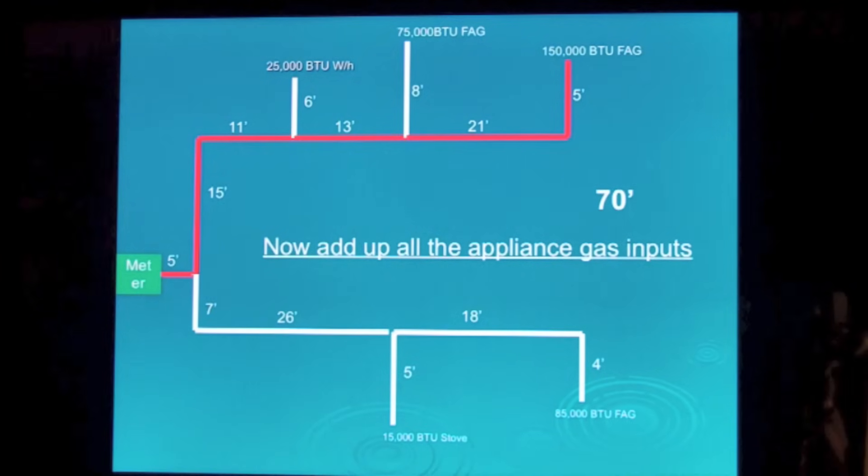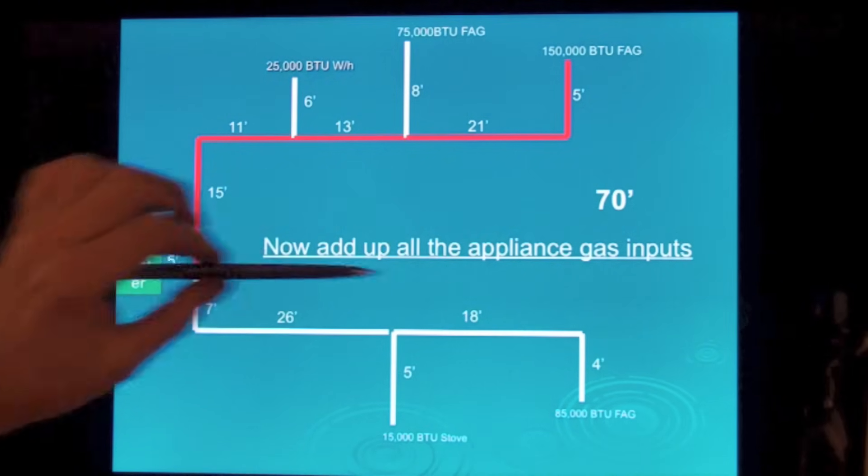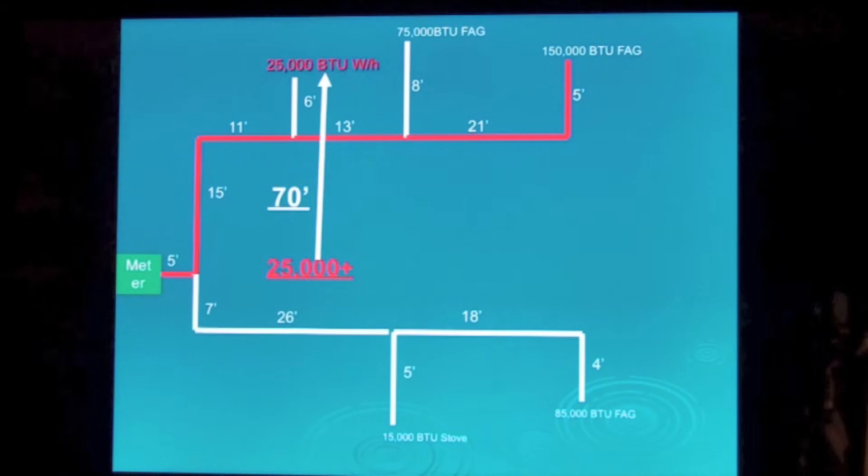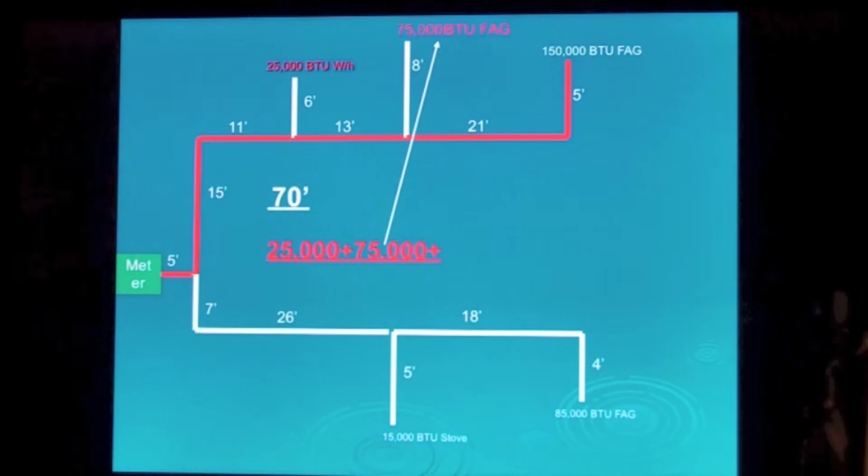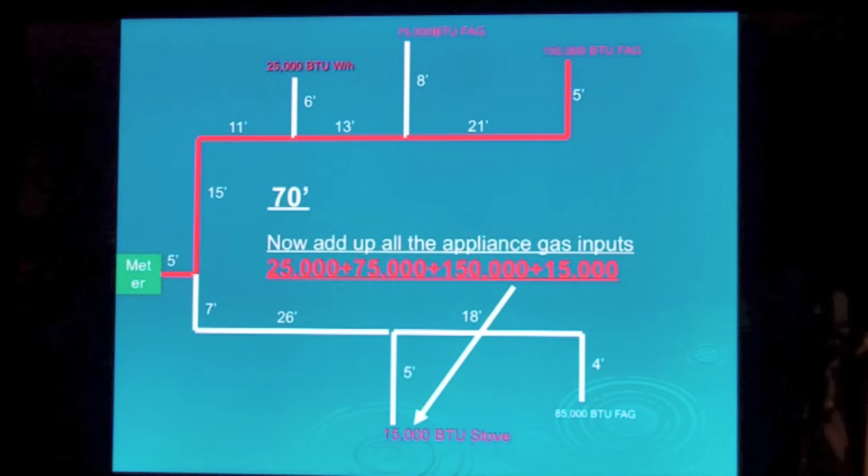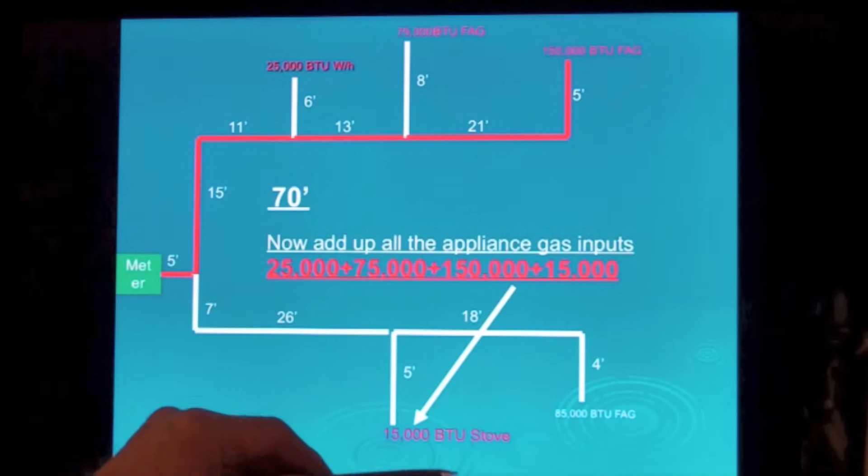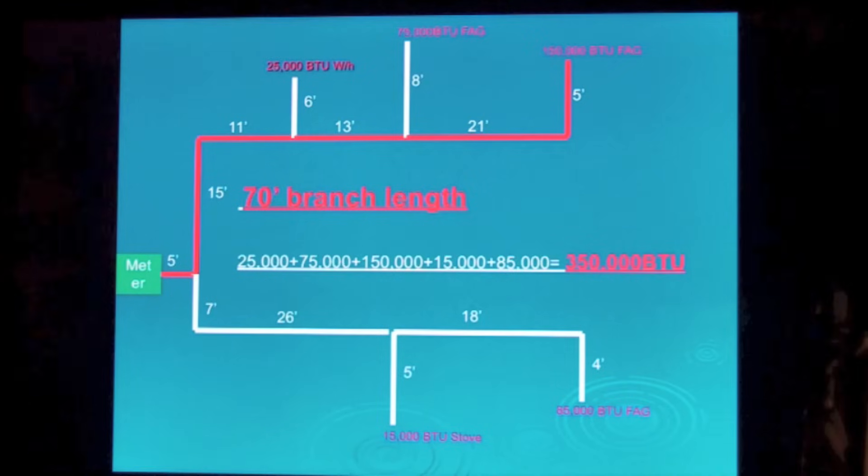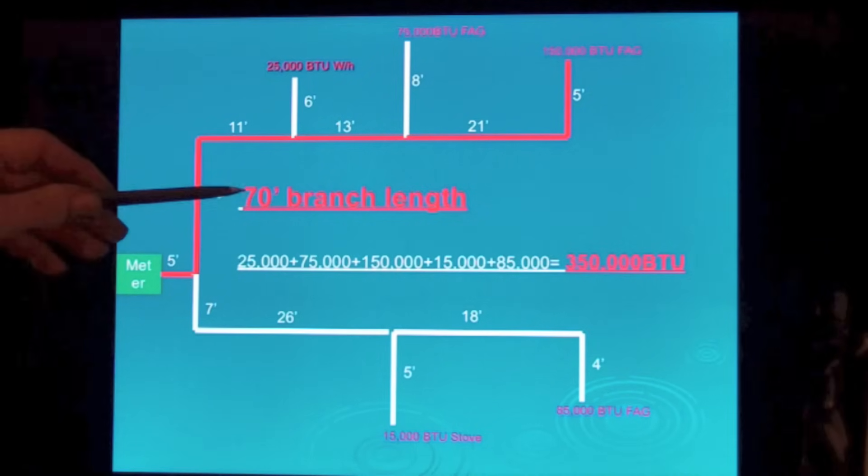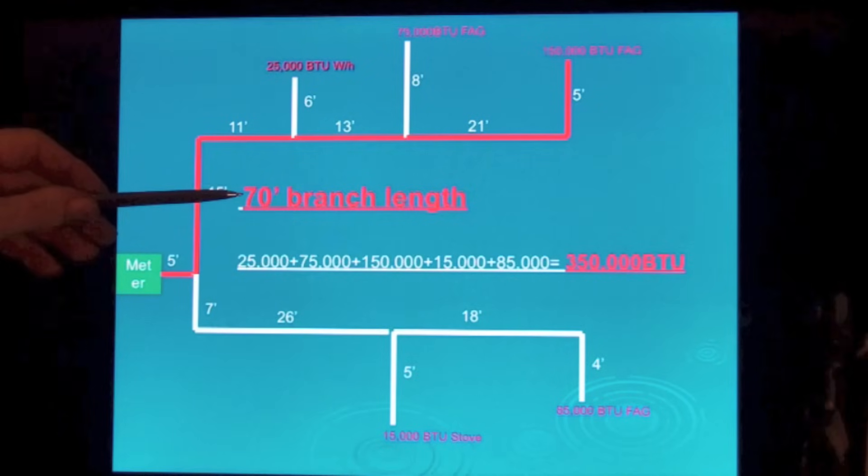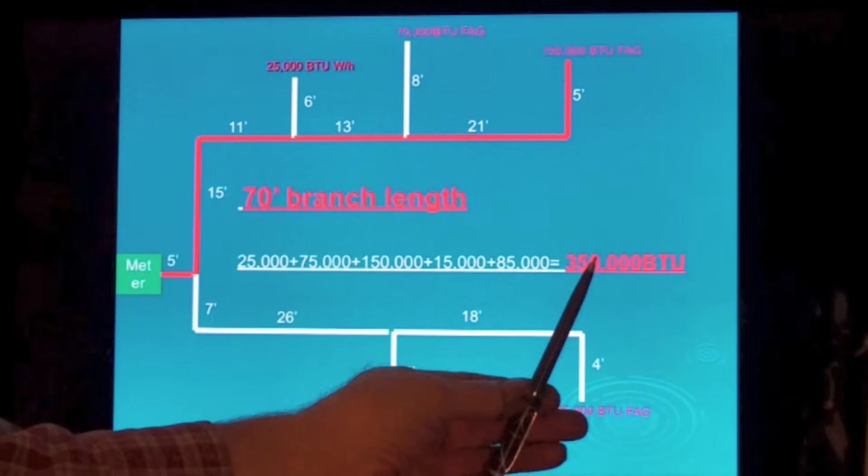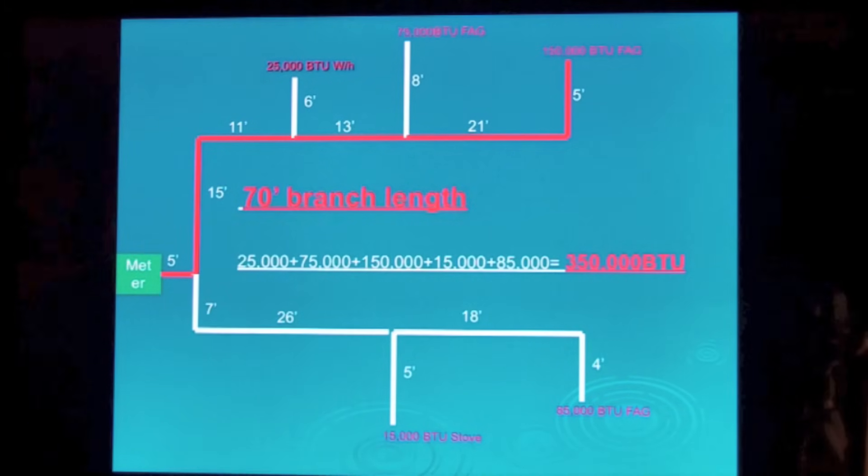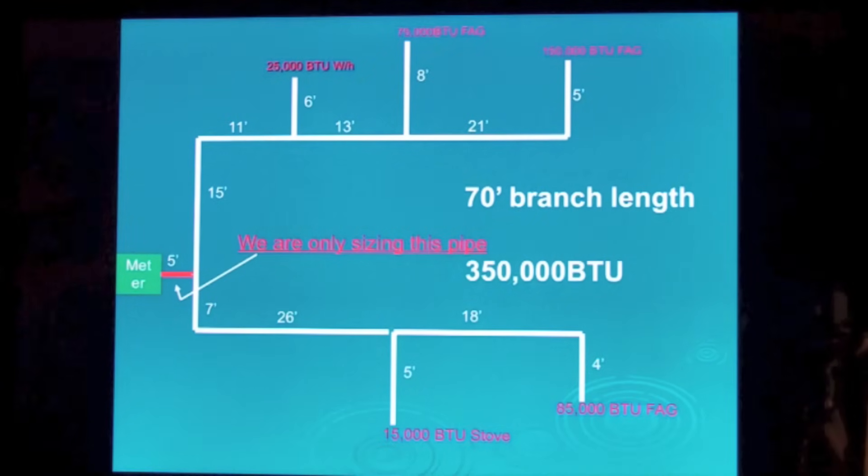Now add up all the appliance gas inputs. It's all the gas appliances because we're sizing this pipe. 25, 25, 75, 150, 15, 85, and that equals 350,000 BTU. We have two numbers now: the branch length of 70 feet and the total number of BTUs that will pass through this one pipe. 70 foot branch length, 350,000 BTUs sizing that one pipe.